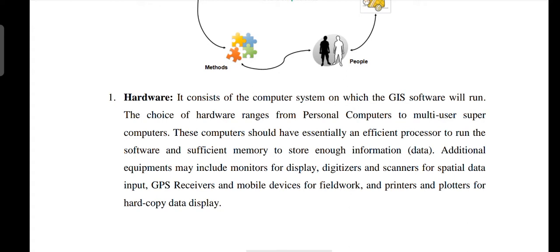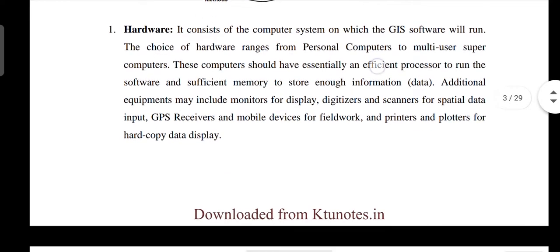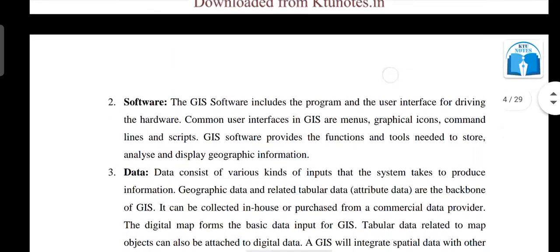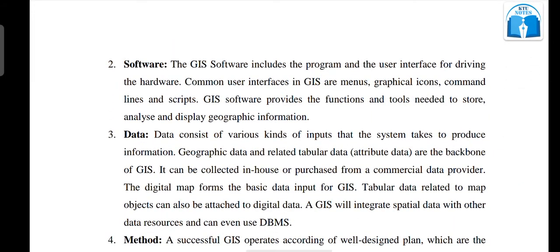The system user uses a personal computer. Additional equipment may include monitors for displaying, digitalizers, scanners for spatial data input, GPS receivers, mobile devices for fieldwork, printers, plotters, and hardcopy data display. Other instruments include theodolite, total stations, and related data collection tools.